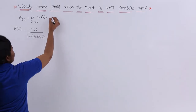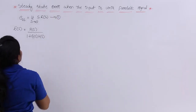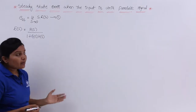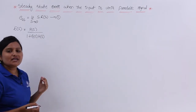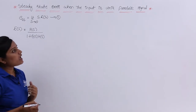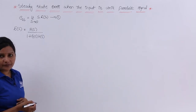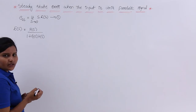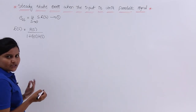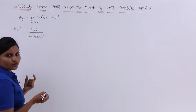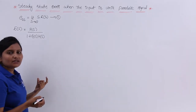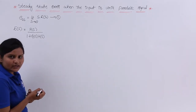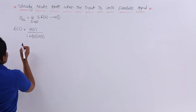Consider equation number 1, where R(s) is the input transform. Here, the input signal is a parabolic signal. The parabolic signal is nothing but T squared by 2. So we need to consider T²/2 as our parabolic signal.